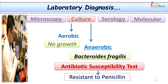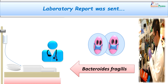The pus was further subjected to bacterial culture for both aerobic and anaerobic organisms. As it is a case of brain abscess, anaerobic organisms are quite important, so aerobic and anaerobic cultures were set up in parallel. At the end of 24 hours, no aerobic organisms grew. However, at the end of 48 hours, Bacteroides fragilis was grown. Further culture was subjected to antibiotic sensitivity and found to be resistant to penicillin.